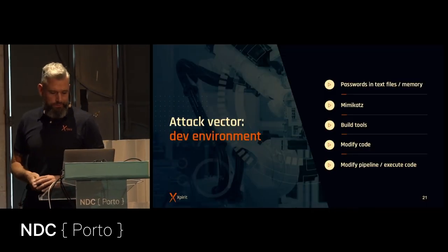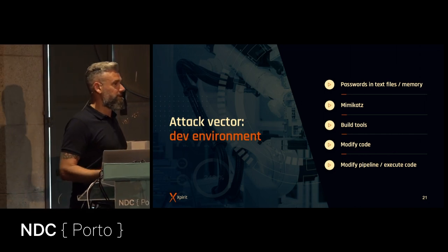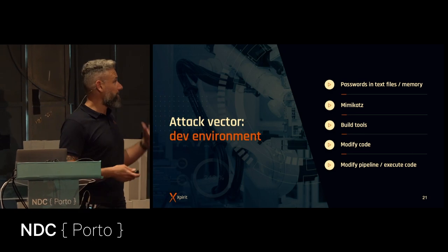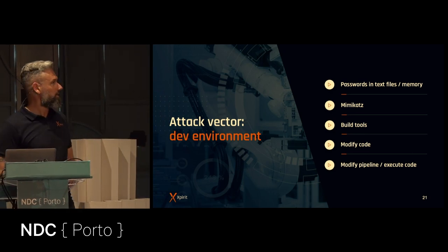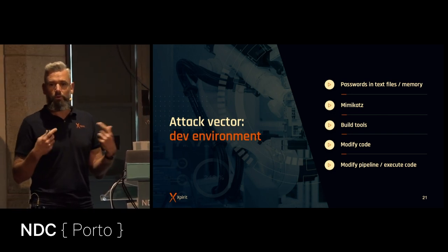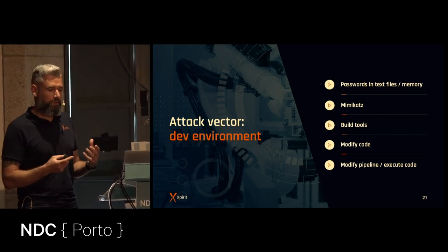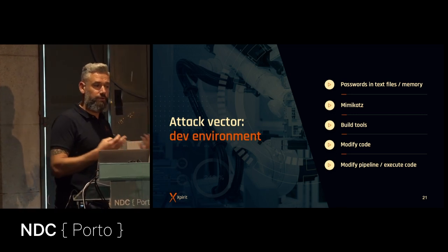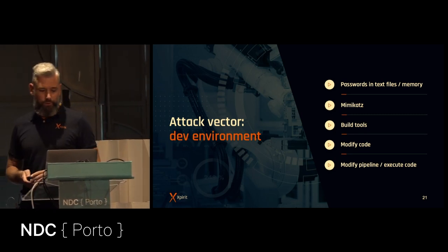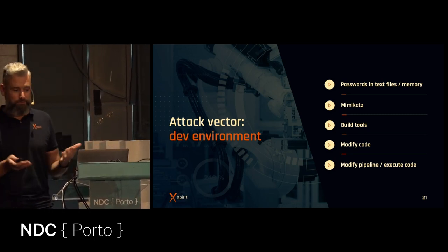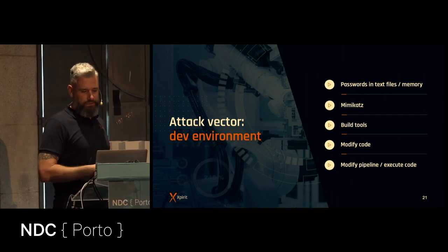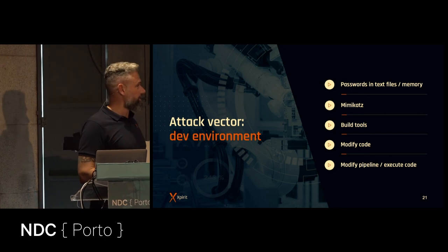Development environment — what can be done with it? There are passwords and credentials in plain text files and environment variables. You can Mimikatz and read all kinds of secrets. You can modify build tools and hack into the build process, attaching vulnerable code to your actual code — like in the SolarWinds attack. You can modify code that gets shipped or committed without the developer knowing, and you can modify pipelines and execute code.